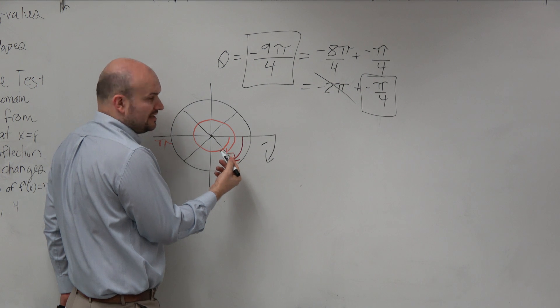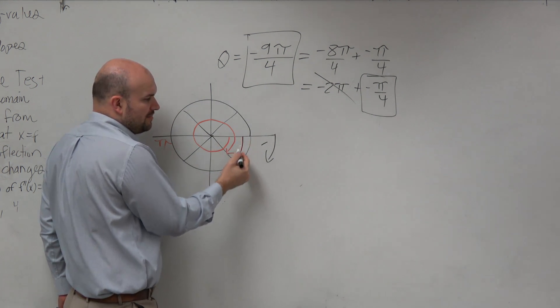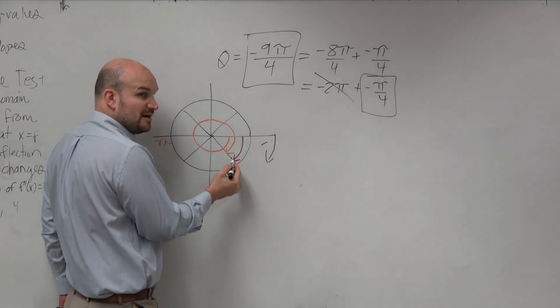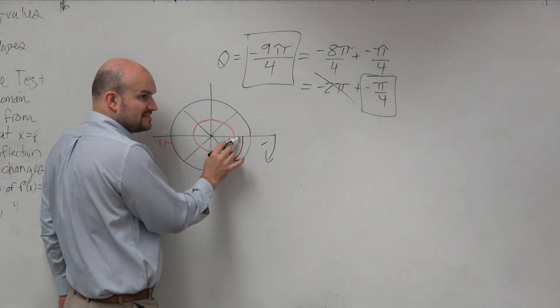So I can use my understanding of that, just to understand how far am I, if I go from here to here, which is negative pi over 4, how far am I away from the x-axis?